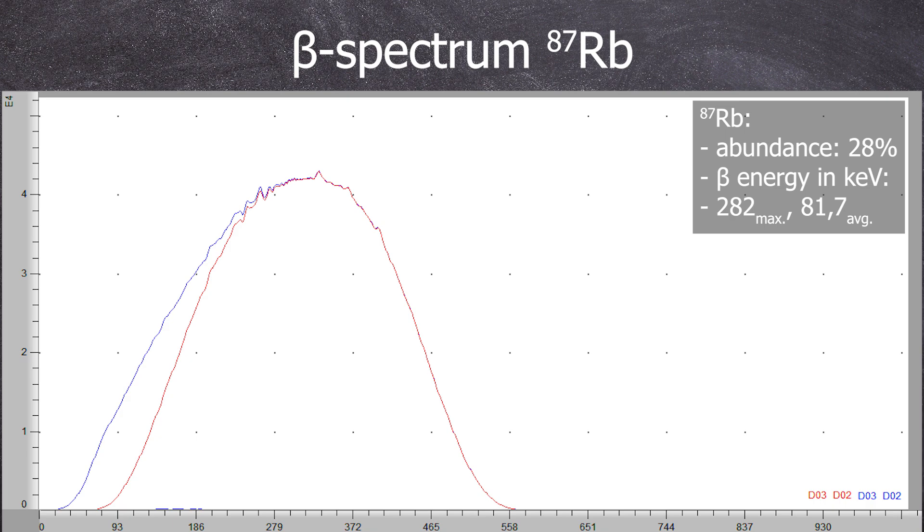Since the beta energy from rubidium-87 is significantly lower, I've marked the triple coincidences in red and the double coincidences in blue. These double coincidences typically indicate lower energy decays such as those observed with rubidium.